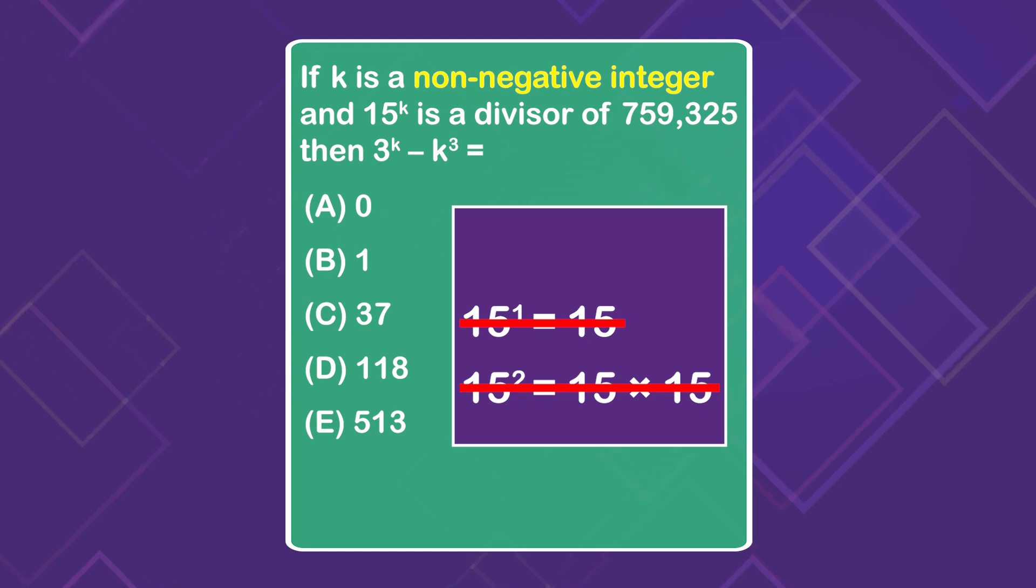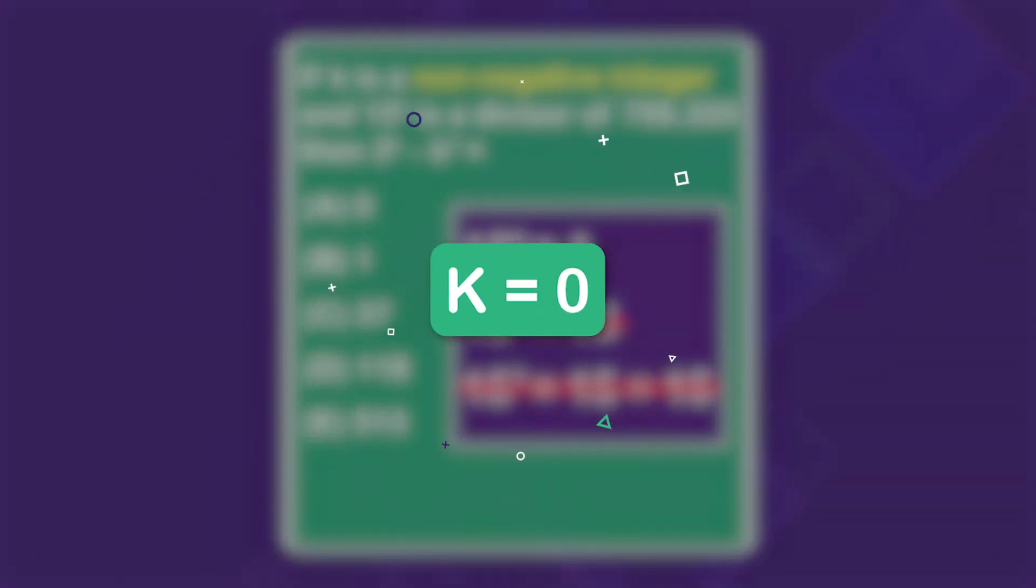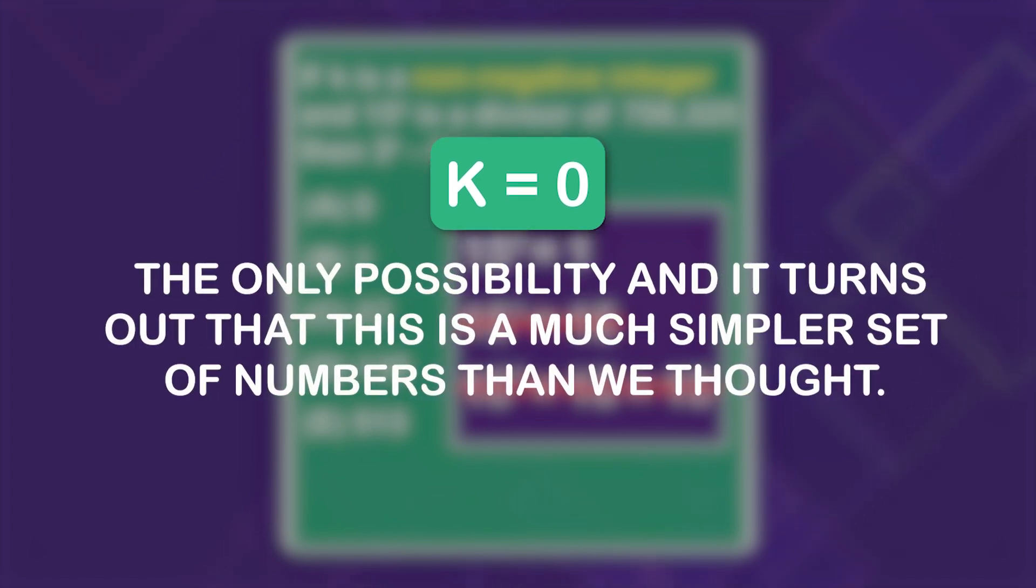So what do we do? Here's where non-negative comes back. The only integer that's not positive or negative is 0. What if I make k equals 0? Well, 15 to the 0 power equals 1, and every positive integer is divisible by 1. So 759,325 is divisible by 1. We arrive at this key fact: k equals 0. That's the only possibility.